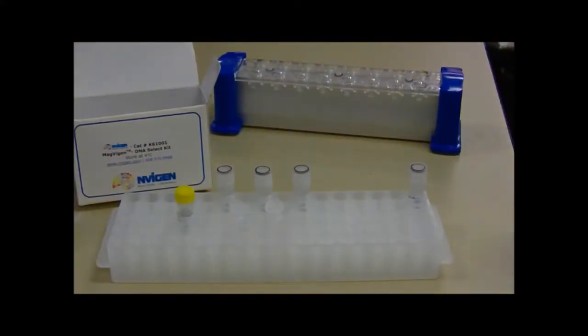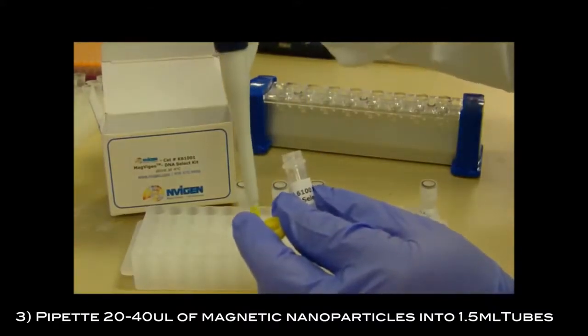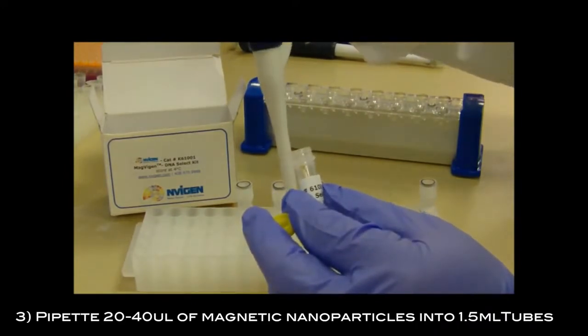Vortex nanoparticles to mix well before use. Take 20 to 40 microliters of magnetic nanoparticles and put them into clean 1.5 milliliter eppendorf tubes.